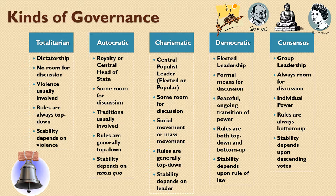Consensus is very unstable. Because individuals have such power, consensus groups tend to break up quickly — we have hung juries almost every day. Group stability may not be as lofty a goal as some people suggest, because the extent to which the group is stable is the extent to which individuals lose power, and the extent to which individuals have power is the extent to which groups lose stability. Consensus, based upon individual power, is generally a fairly unstable form of governance, though not necessarily a bad one.